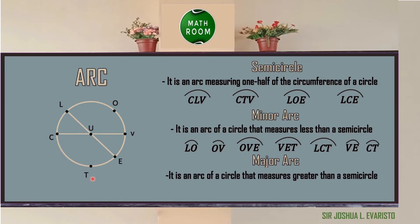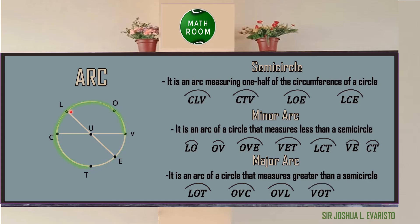A major arc is an arc of a circle that measures greater than a semicircle. Examples of a major arc are arc LOT, arc OVC, arc OVL, arc VOT, and arc TEL.